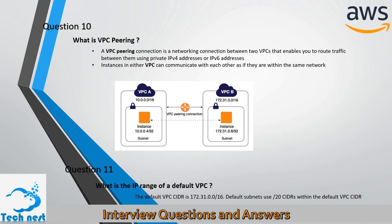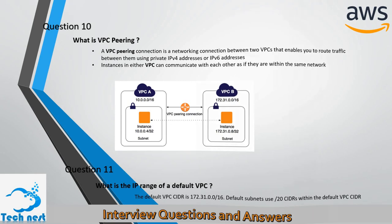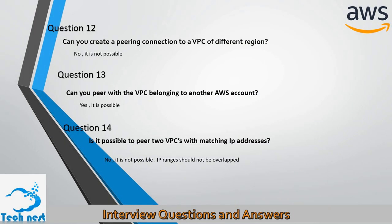Question eleven: What is the IP range of a default VPC? The default VPC IP range is 172.31.0.0/16, and default subnets use /20 CIDRs within the default VPC CIDR. Question twelve: Can you create a peering connection to a VPC of a different region? No, it is not possible to create a peering connection to a VPC of a different region.